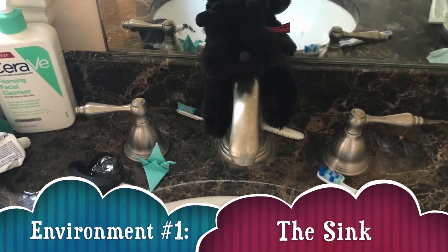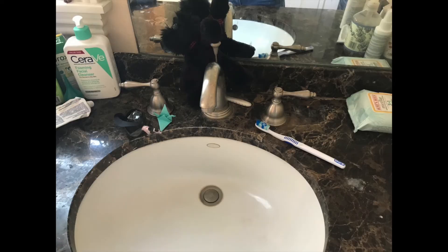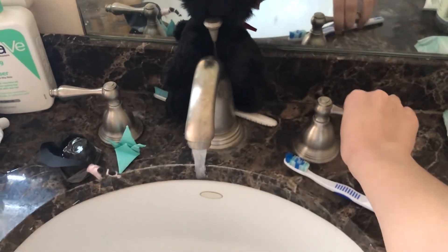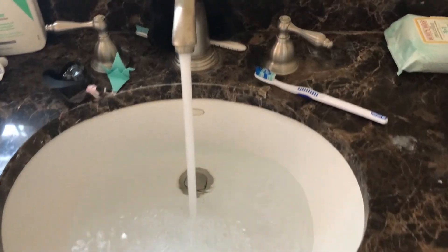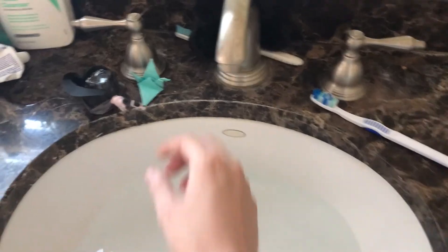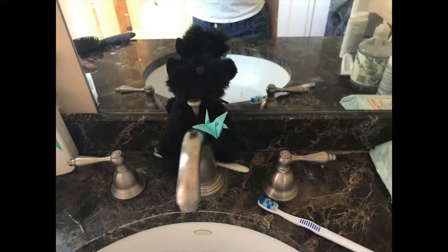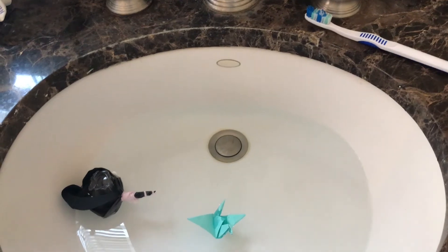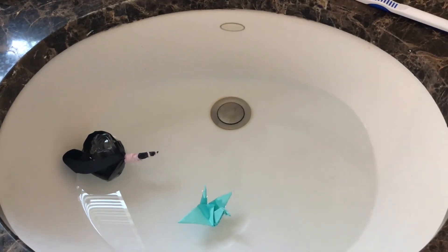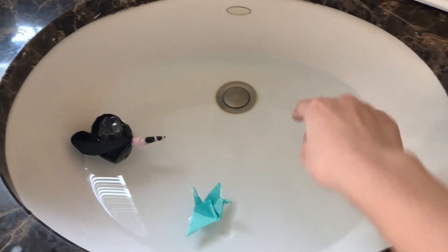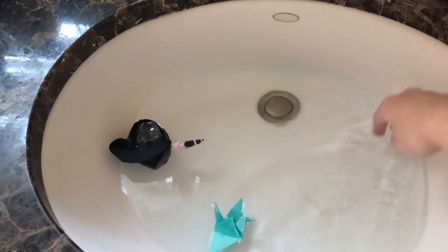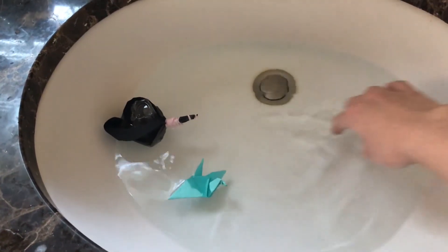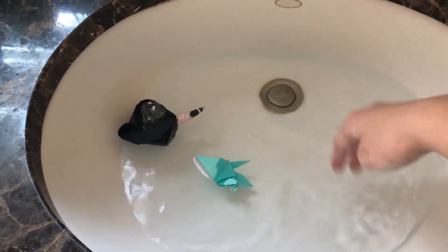Environment number one. The sink. I helped plug the sink so that we could make a fake lake. Then, after I filled the sink with water, I threw in my bird. And I threw in mine. I noticed how my bird was doing fairly well in the water. It was just floating really well, even when I disturbed the water a bit.